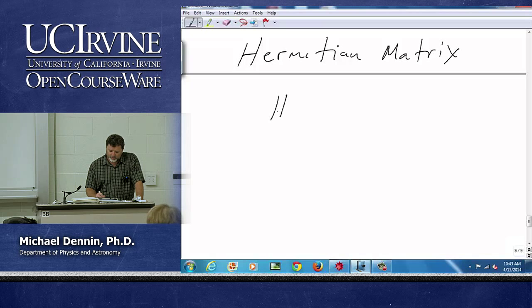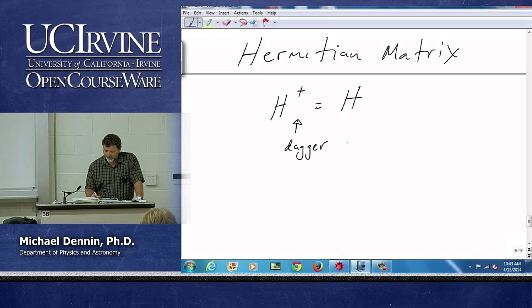If you recall, we define this, this is called the dagger operator, H dagger. It is the complex conjugate transpose.